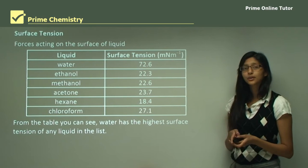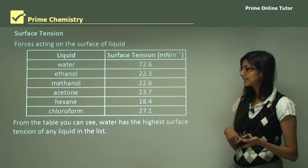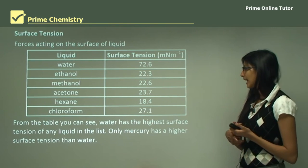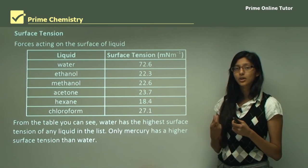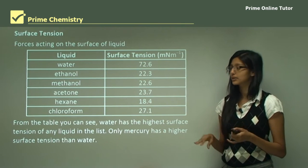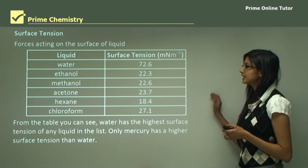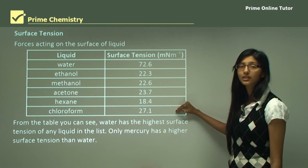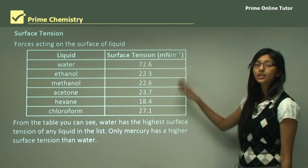From the table you can see that water has the highest surface tension of any liquid in the list. Only mercury has a higher surface tension than water, but mercury is a very thick liquid — it's almost like a metal. Except for mercury, all other liquids in the table have a much lower surface tension than water, which has a very high surface tension of 72.6.